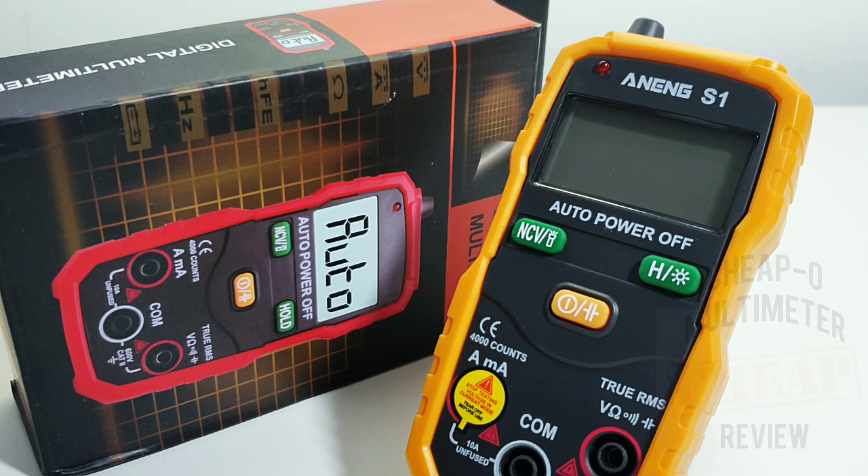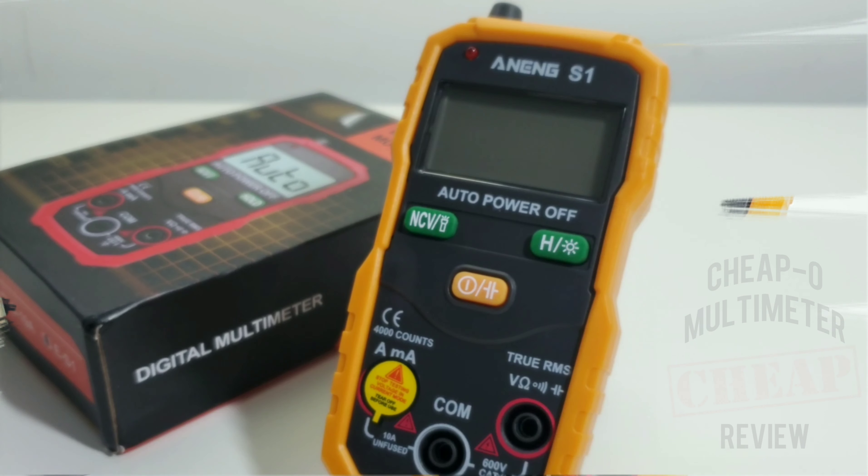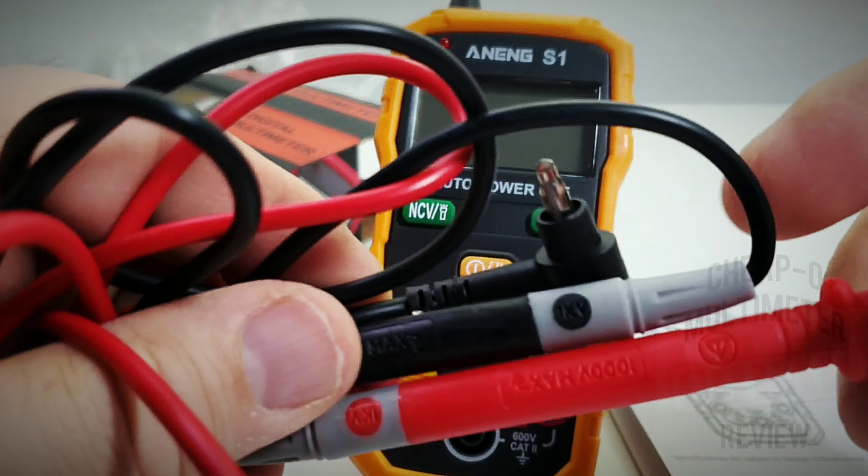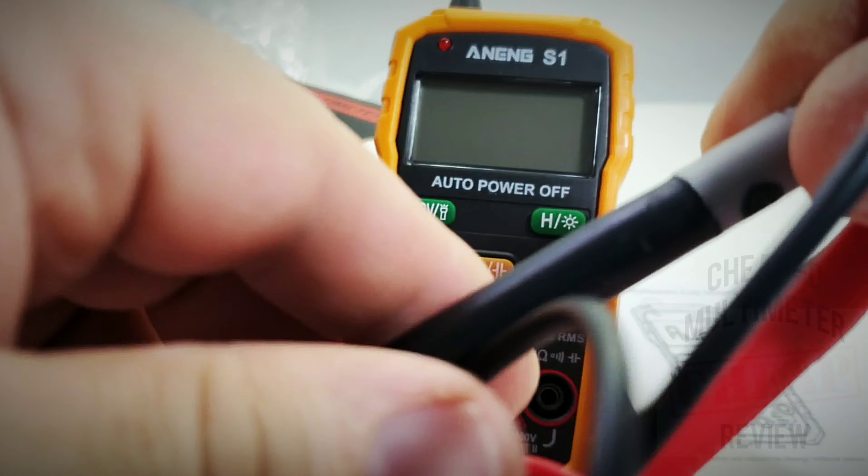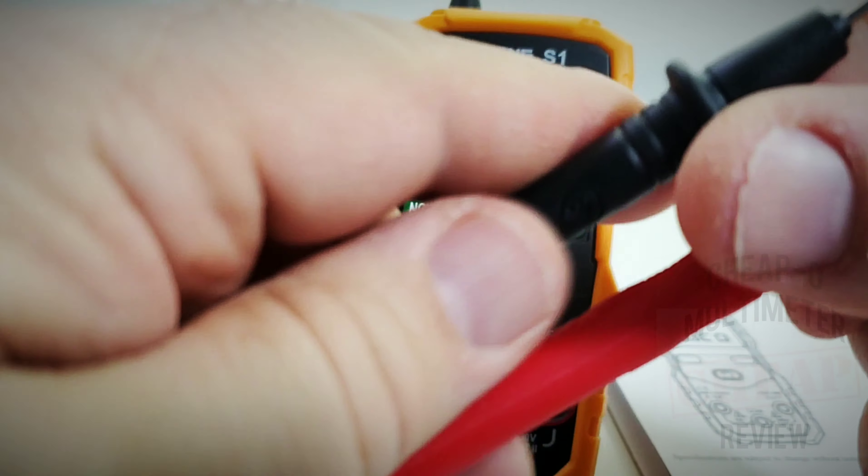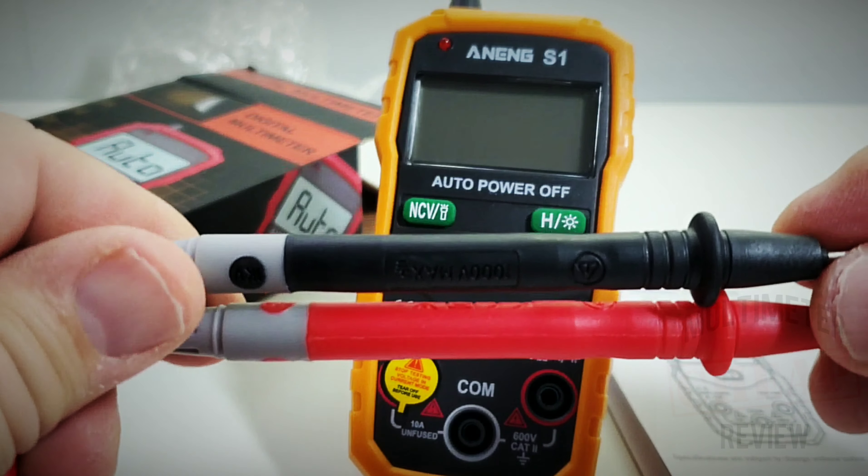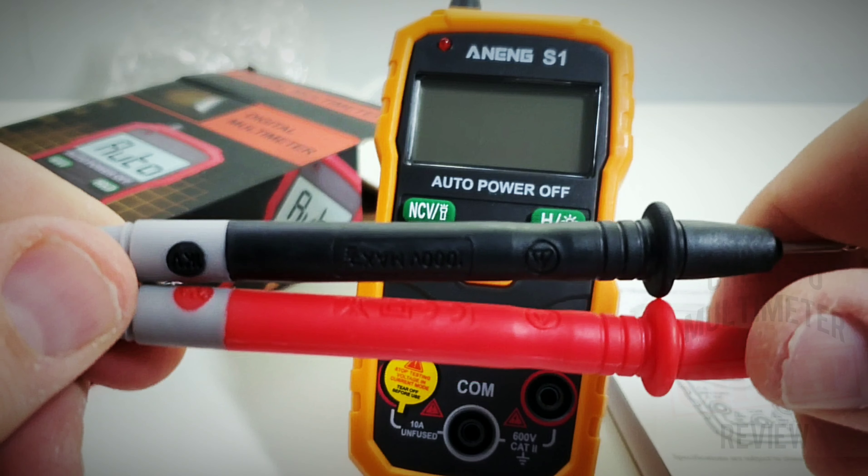Got the ANENG S1 off of eBay, I paid a whopping $16. Of course it came with your standard test leads, now these are a little bit cheaper than some of the other cheapo meter test leads that have been coming out as of late, definitely don't have that same feel of quality.